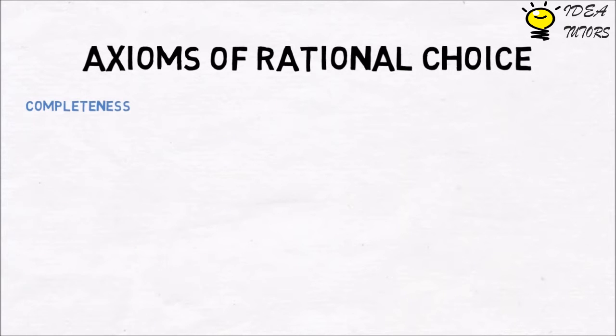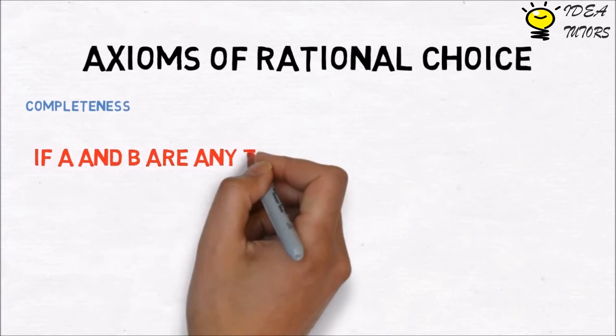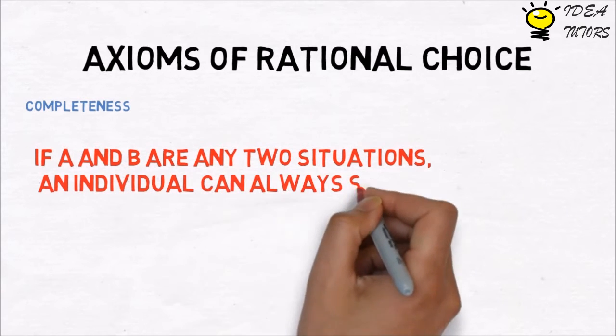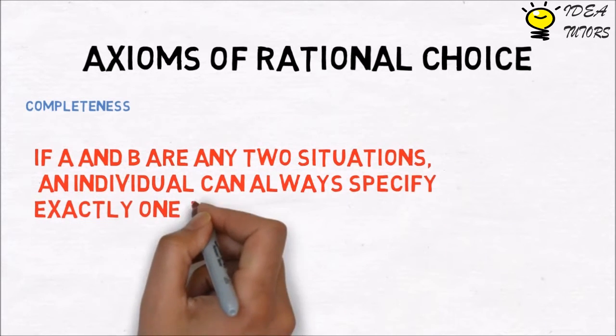Axioms of rational choice. Completeness: If A and B are any two situations, an individual can always specify exactly one of these possibilities.